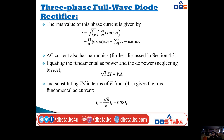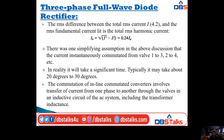The AC current also has harmonics. Equating the fundamental AC power and DC power and neglecting losses: √3 · E · I = Vd · Id. Substituting Vd in terms of E gives the RMS fundamental AC current I₁ = (√6/π) · Id = 0.78 Id. The RMS harmonic current is Ih = √(I² − I₁²) = 0.24 Id.